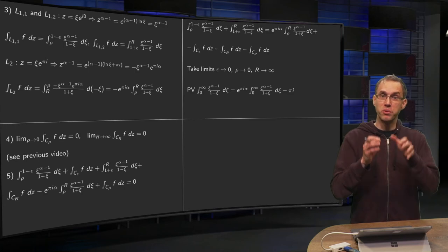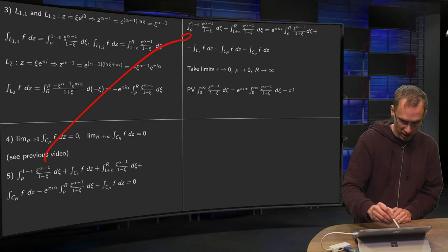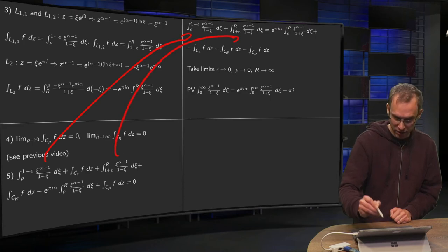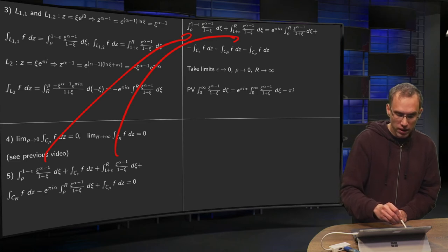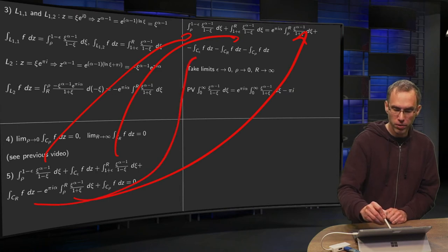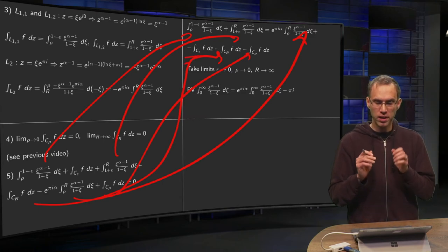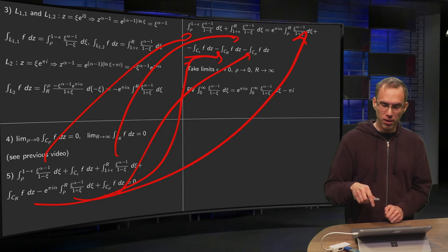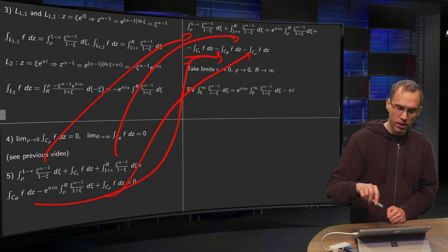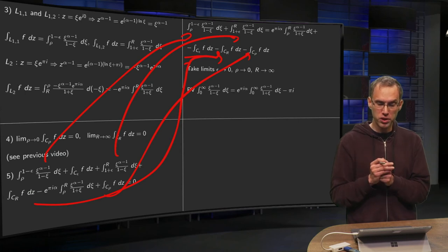Then what we want to keep, we put it on the left-hand side. So that's this one here and this one there. Then this integral goes here. The ones who are going to cancel out, we just put them there and there. And here you have your c epsilon, which gives you a contribution later on. So taking limits, let's make some room. Taking limits, epsilon to 0, rho to 0, and r to infinity.